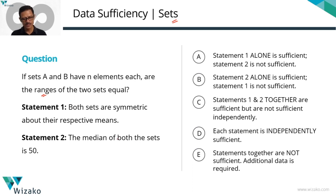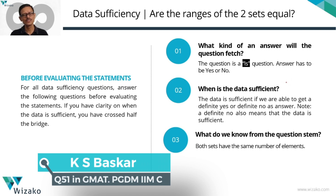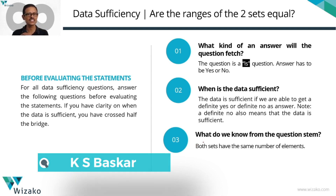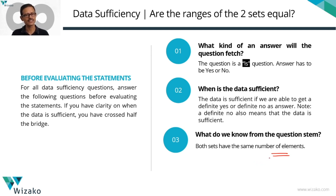It's an IS question. For IS questions, the answer is to be a yes or no. When is the data sufficient? We have a conclusive yes — saying that the ranges of both these sets are the same — or we say that the ranges of these two sets cannot be the same. In either case, the data is sufficient. What do we know from the question stem? Both sets have the same number of elements: n of A equals n of B. The cardinal number for both sets is the same.